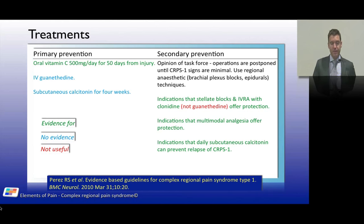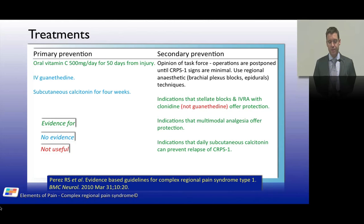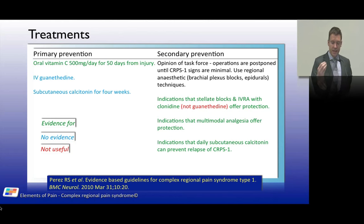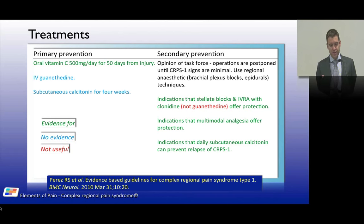Primary prevention is also discussed in the literature. There is evidence for vitamin C, 500 mg per day for 50 days following an injury such as a wrist fracture, as a primary preventative measure for CRPS. This is particularly relevant for women presenting to the emergency department with distal upper limb fractures. There is no evidence for guanethidine or subcutaneous calcitonin as preventive agents.